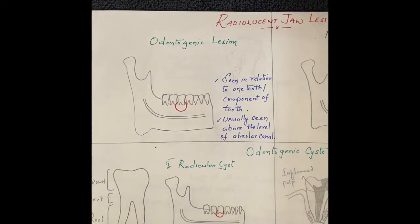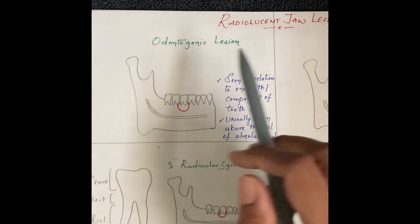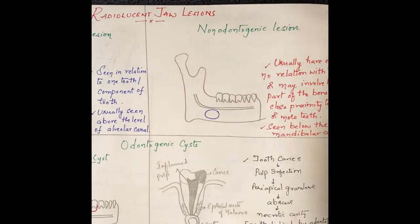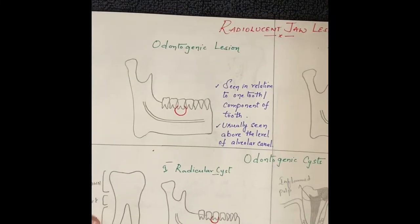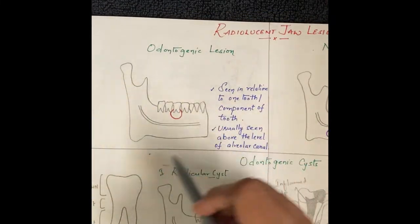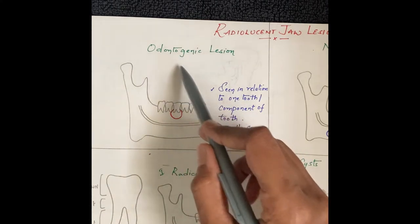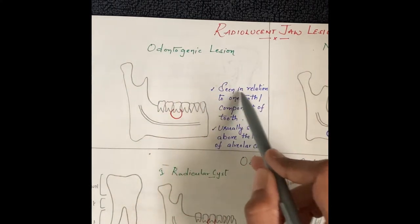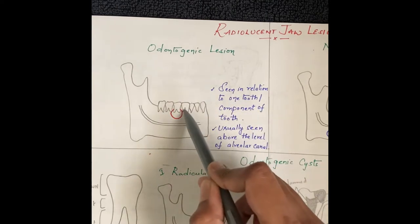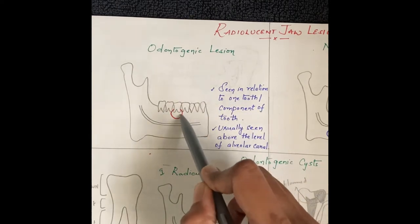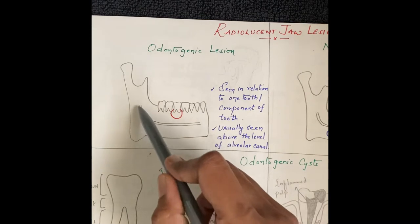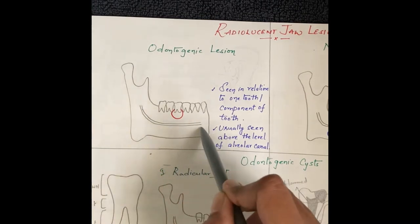Today's topic is radiolucent jaw lesions. In radiolucent jaw lesions we have odontogenic lesions and non-odontogenic lesions. Odontogenic lesions are seen in relation to one tooth or a component of a tooth, and they are usually seen above the level of the inferior alveolar canal or mandibular canal.